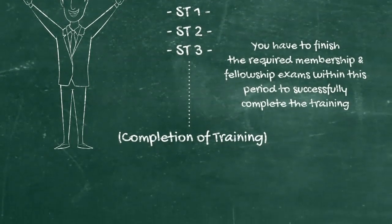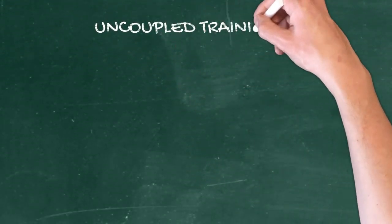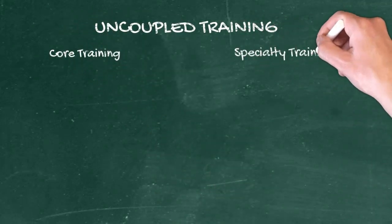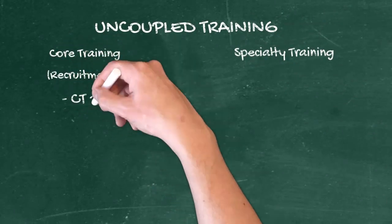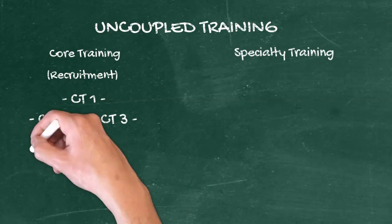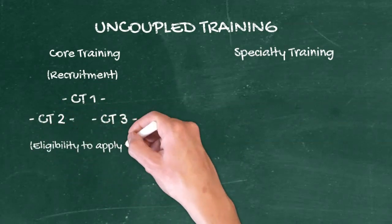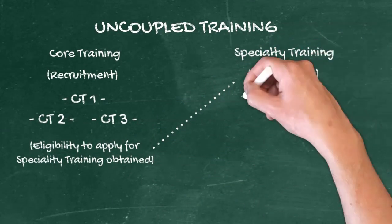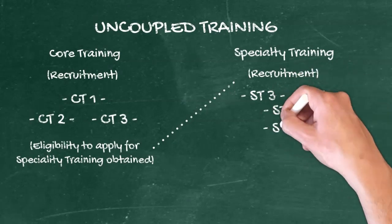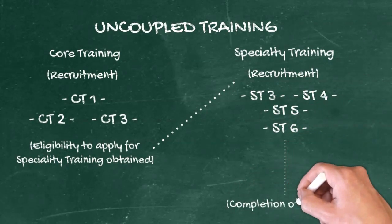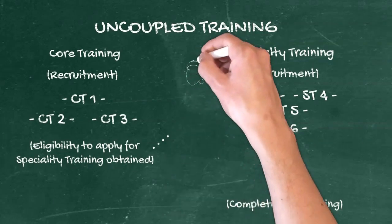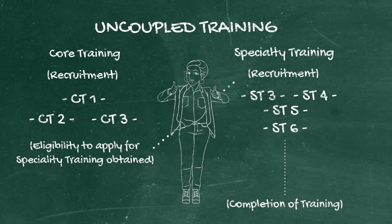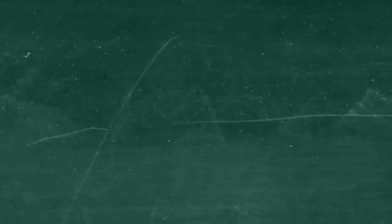Let's move on to uncoupled training. As the name suggests, the two parts are core training and specialty training — they are separate, and two recruitments happen at two different times. CT stands for core training, and after completing core training you have to meet the eligibility criteria for specialty training, then apply again through the recruitment process. You similarly complete the specialty training years, and the specialty training starts from ST3 or ST4 level because the core training was the initial part of the whole training.